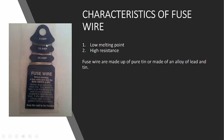If current higher than 5 ampere tries to flow through a 5 ampere fuse wire, it will melt and disconnect the circuit. Similarly, if more than 30 ampere of current tries to flow through the 30 ampere fuse wire, it will melt and disconnect the circuit.